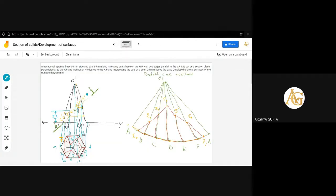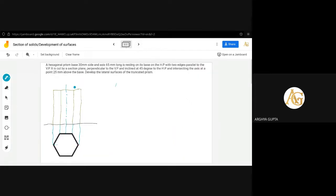The method to draw the projection of the pyramid is the radial line method. Now we will draw the projection of a prism. Prism means parallel sides, so the development method will be the parallel line method.